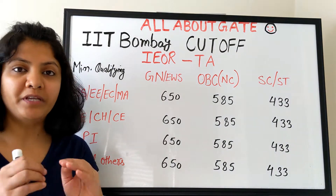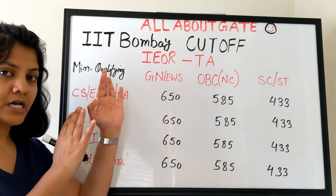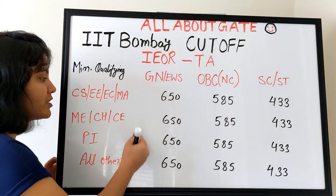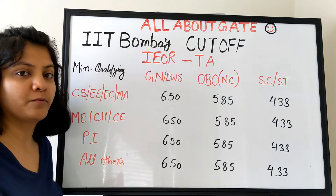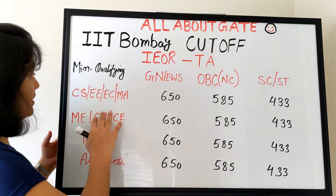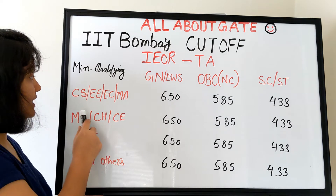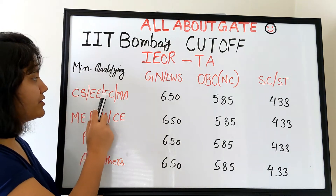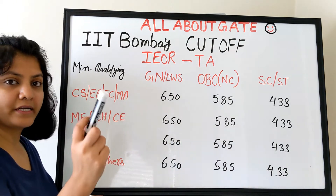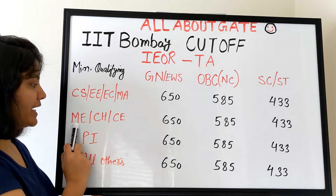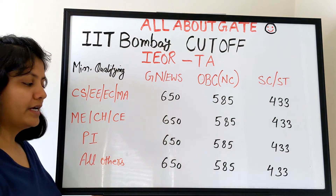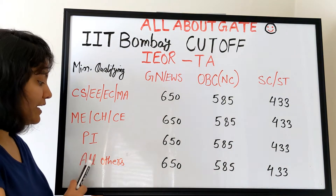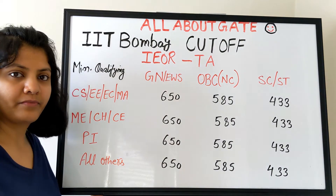We do have cutoffs only for the TA category — the minimum qualifying cutoff to apply for this department. These are for various categories and for various branches, because it is an interdisciplinary program. One category is defined as those who wrote their GATE exam in Computer Science, Electrical, Electronics, or Mathematics. Another category covers Mechanical, Chemical, and Civil. The third is Production and Industrial Engineering, and the last covers all others.